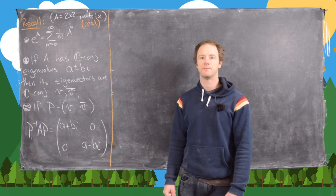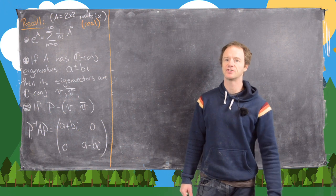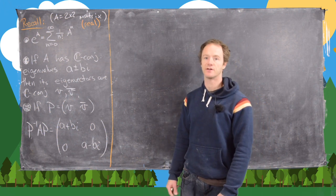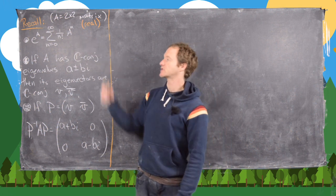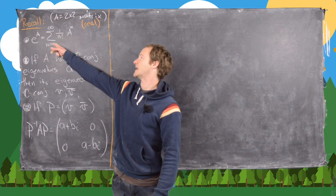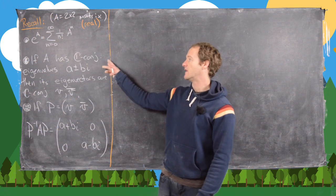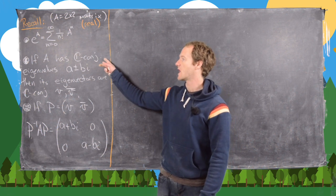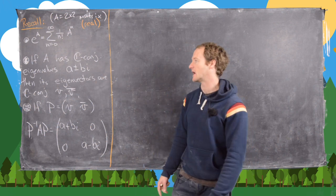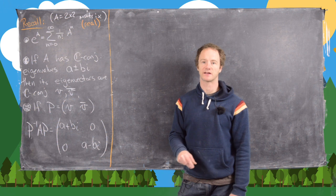In this video we're going to look at the case of the matrix exponential when we have a real two-by-two matrix that has complex conjugate eigenvalues. The matrix exponential is given by the Taylor series expansion of e to the X evaluated at the matrix A. Further, if A has complex conjugate eigenvalues A plus or minus Bi, then its eigenvectors are also complex conjugates.